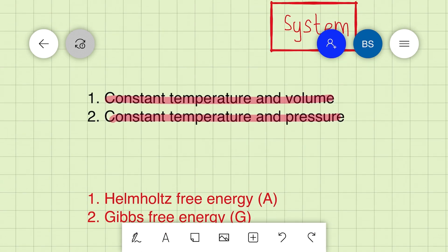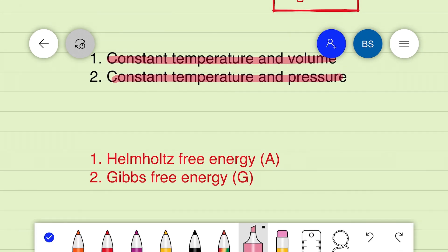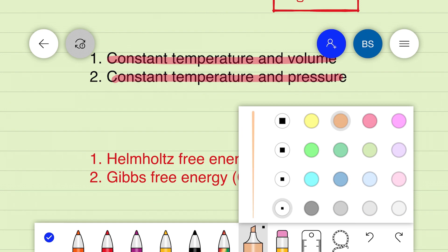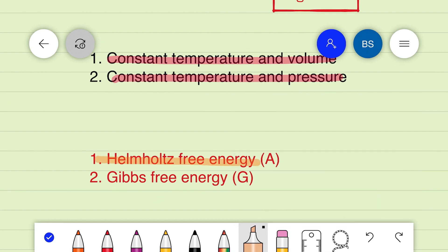In this regard, we have introduced two functions: Helmholtz free energy, represented by uppercase A, and Gibbs free energy, represented by uppercase G. In this session we will look more into the Helmholtz free energy or work function and its physical significance.